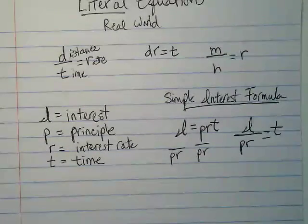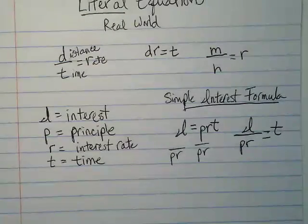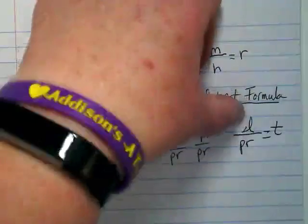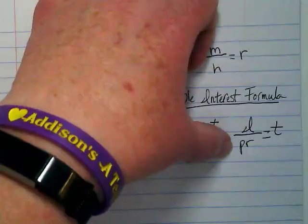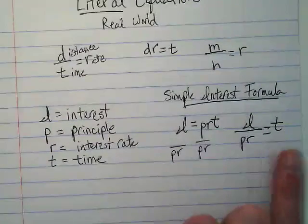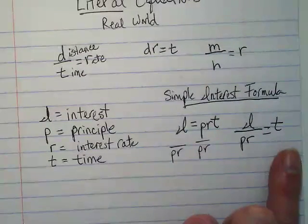And this is what the people who are investing their money would use. They would say, okay, on my statement, I see that you paid me this dollar amount of interest. I'm going to divide it by the original amount I put in and the rate you told me you were going to give me. Does that equal the amount of time that I left that money in?